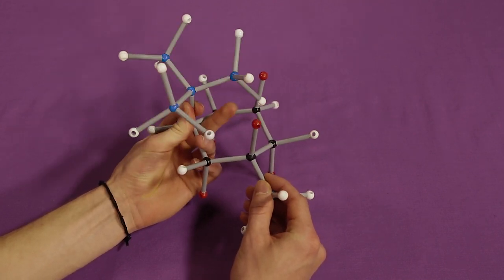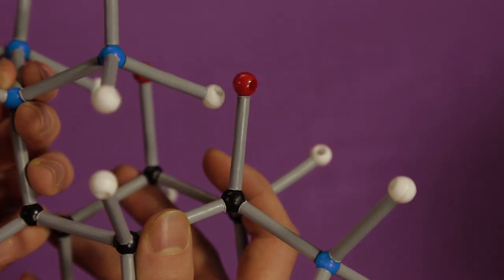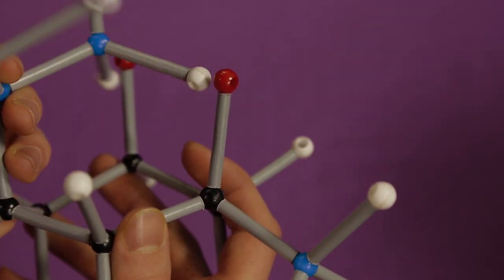Currently, the tert-butyl group is pretty close to the other axial atoms, so let's try and do a ring flip and see what happens.